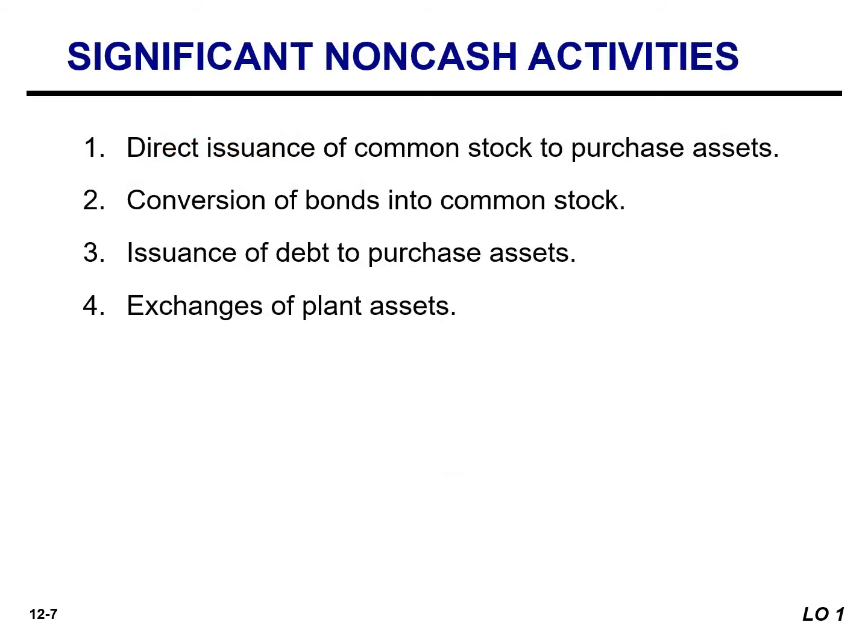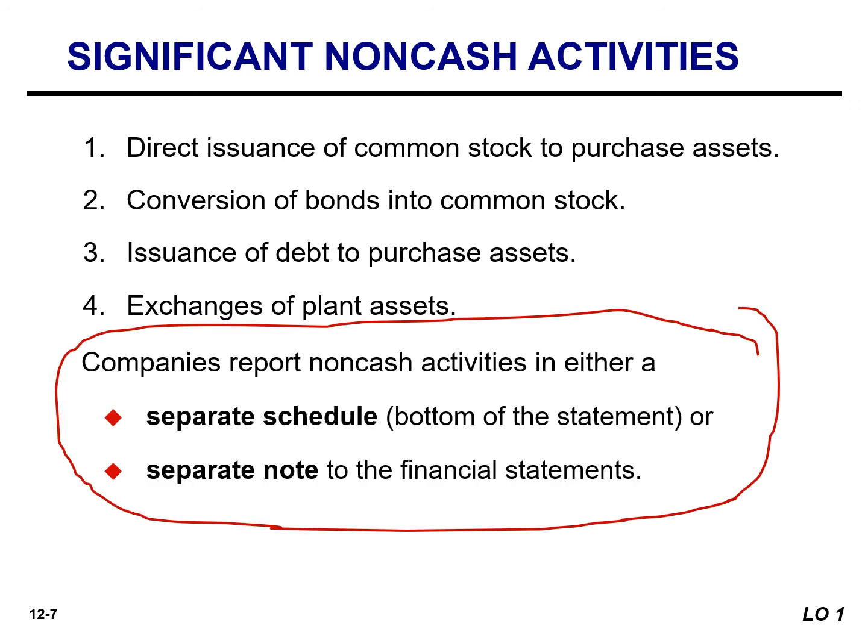Not all of a company's significant activities involve cash. Examples of significant non-cash activities are the issuance of common stock to purchase assets, converting bonds into common stock, issuing debt to purchase assets, and exchanging plant assets. Companies do not report in the body of the statement of cash flows significant financing and investing activities that do not affect cash. They will report these activities in either a separate schedule at the bottom of the statement or in a separate note.